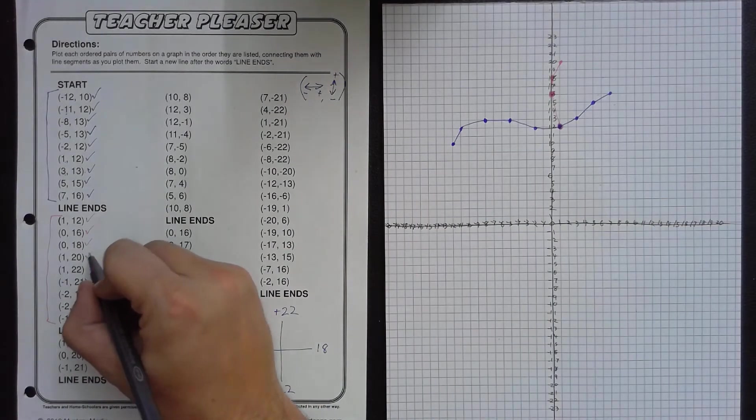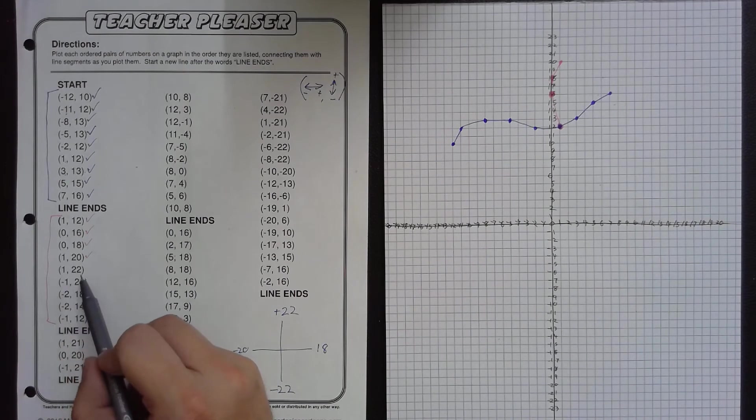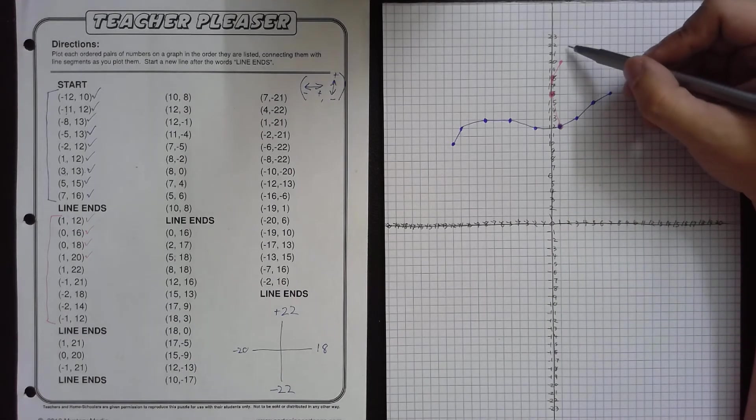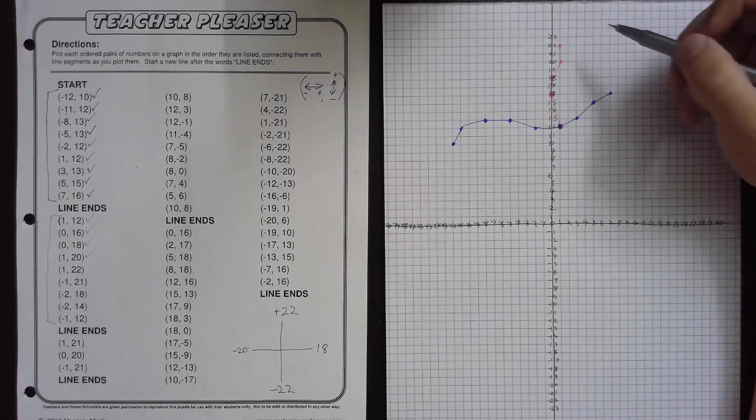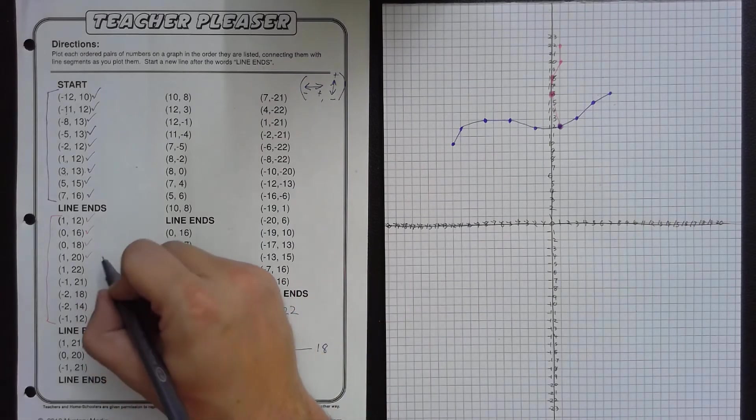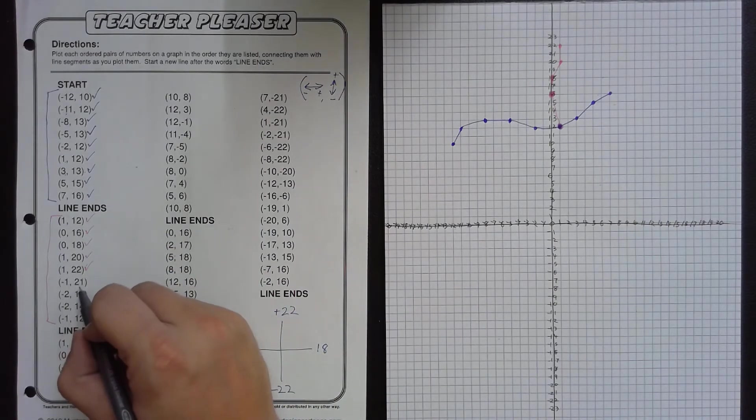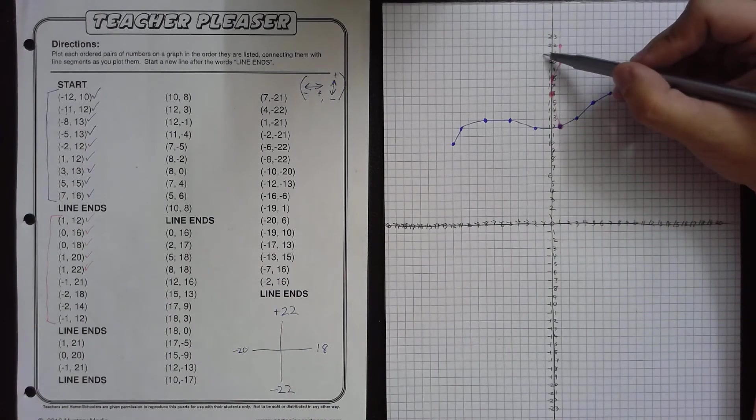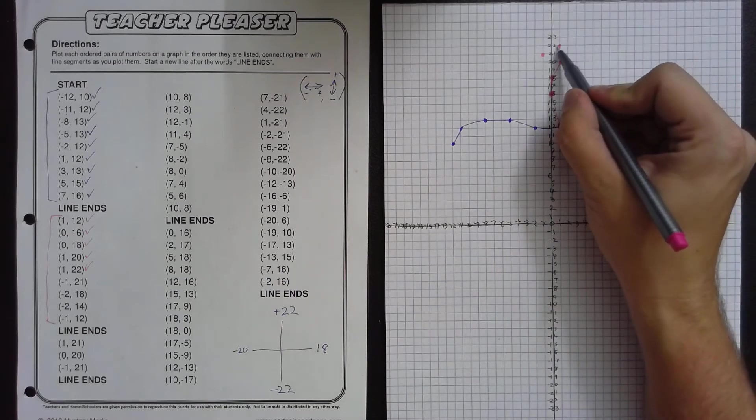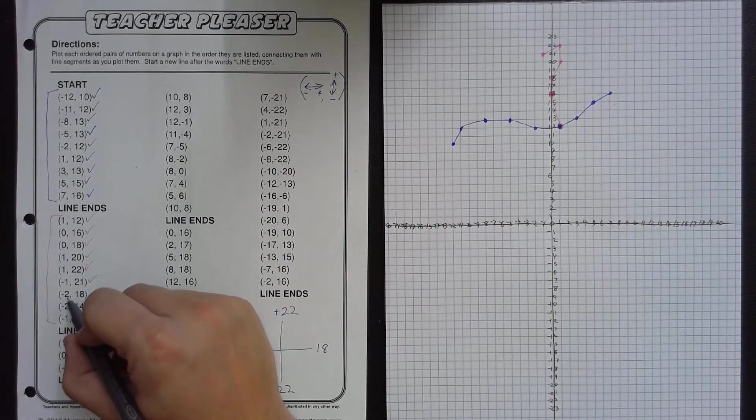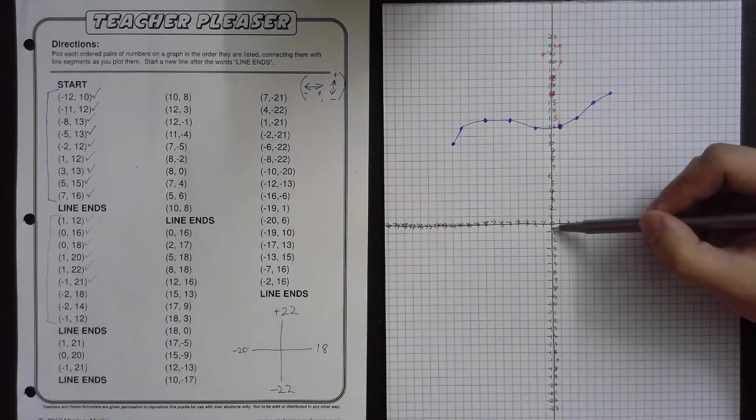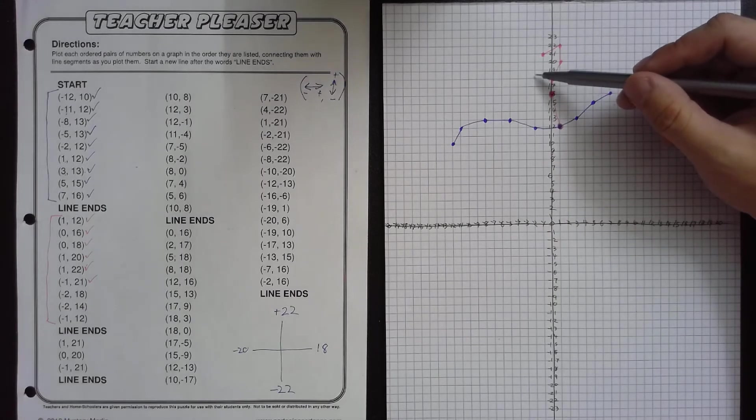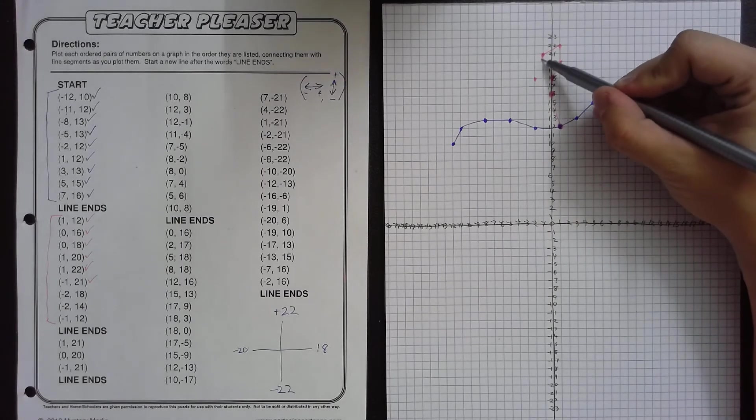Kind of diagonal. After that is 1, 22. So we go 1 to the right and 22 up. After that is negative 1, 21. So we go 1 to the left and 21 up. And we'll connect these. Next up is negative 2, 18. So we will go 2 to the left and 18 up.